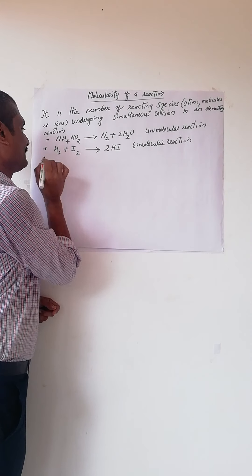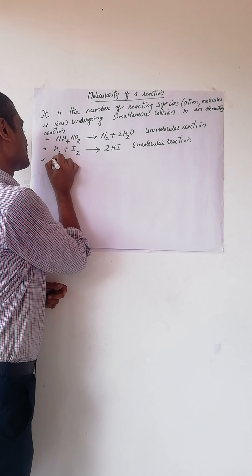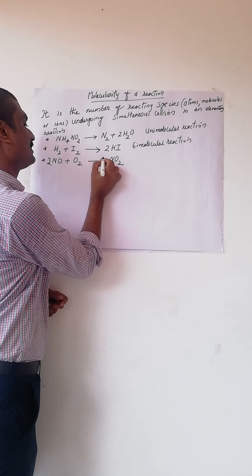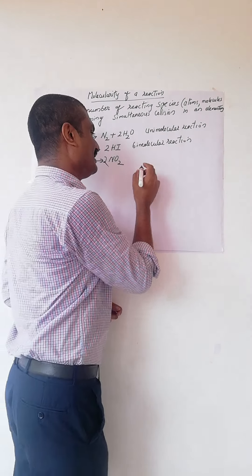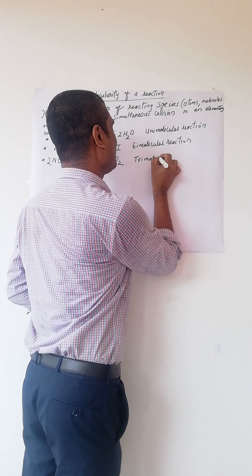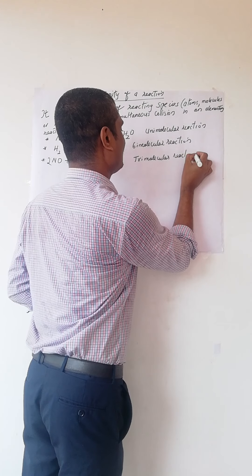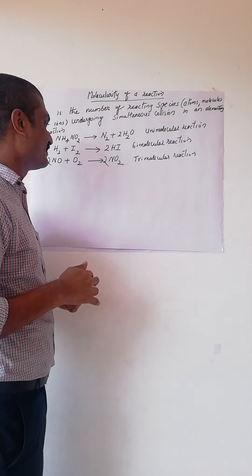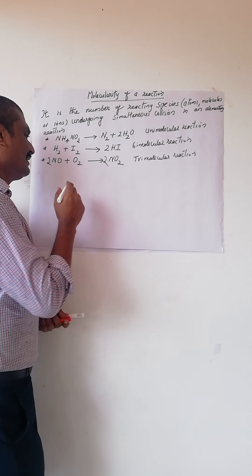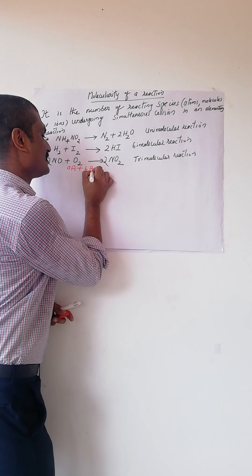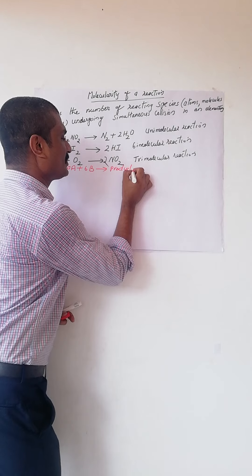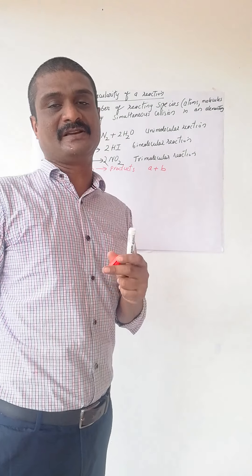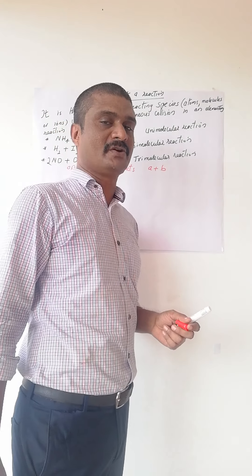When the reaction involves three reactant species, its molecularity is three and it is called a trimolecular reaction. In general, if A moles of A reacts with B moles of B to form some products, the molecularity is A plus B.